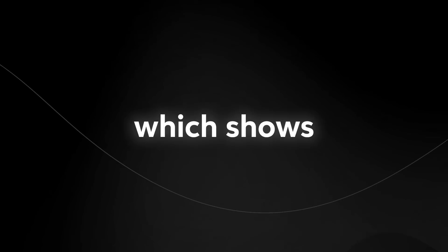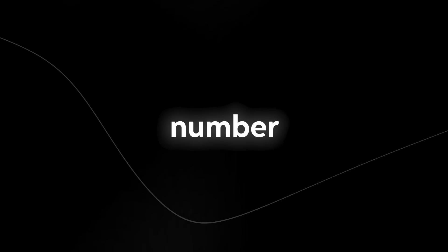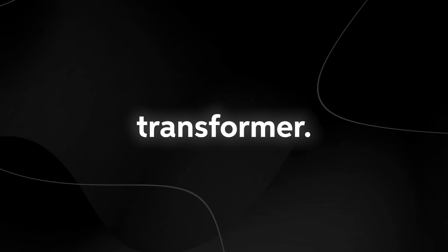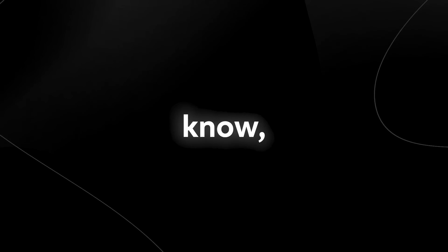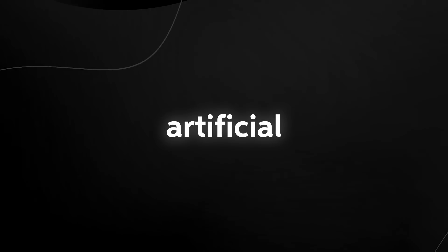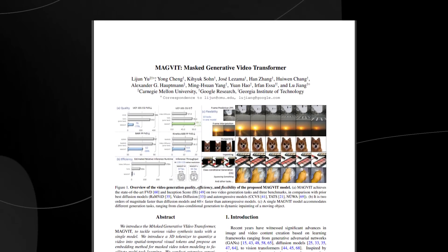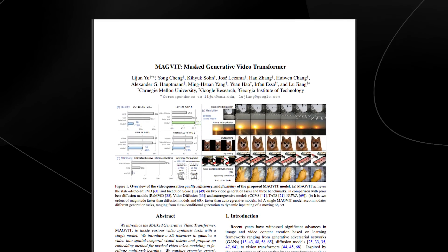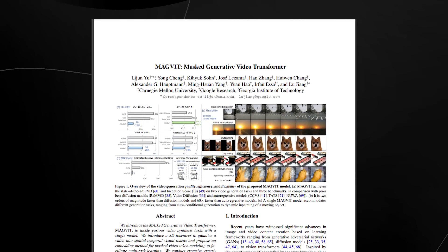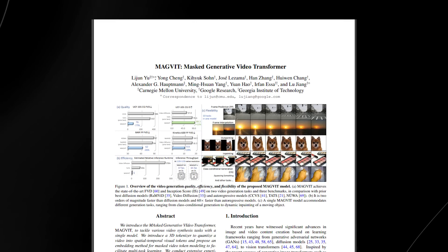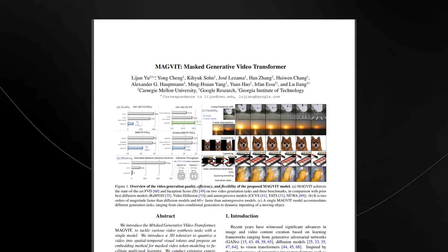Google Research have done it again. In this video we're going to be taking a look at a research paper that was just released, which shows a various number of uses for their new generative video transformer called MAGVIT — a masked generative video transformer. I've looked at tons of different research papers and so far we haven't actually seen anything like this before.